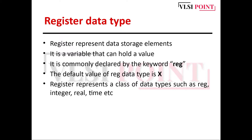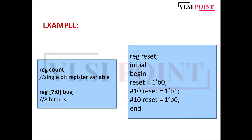Starting with a basic introduction to the register data type: it is used for data storage purposes, it can hold a value, and it is declared by the keyword reg. The default value is unknown. The different classes of register data types are reg, integer, real, and time. For a single-bit declaration, simply write reg followed by the name of the variable, representing a single-bit register variable.